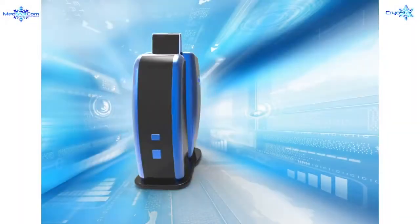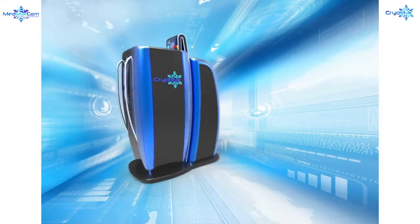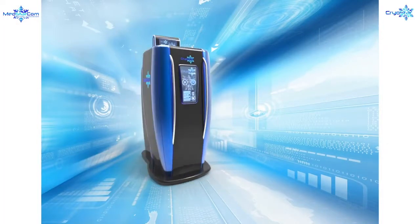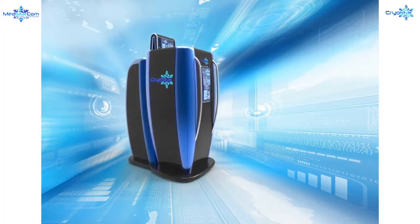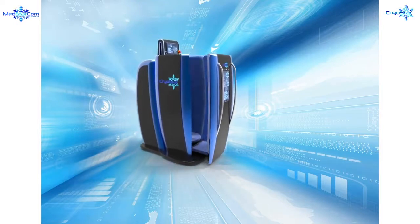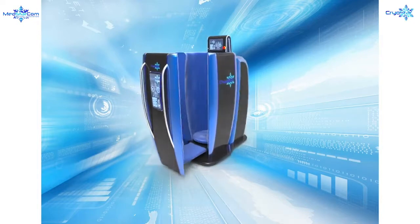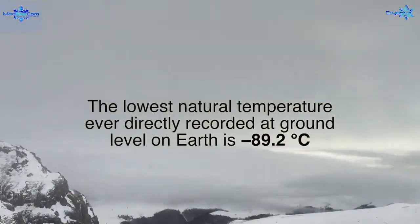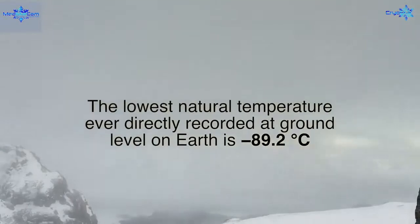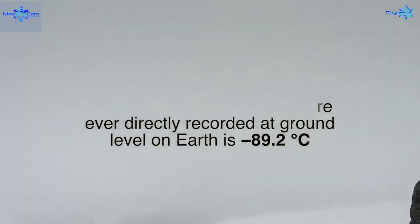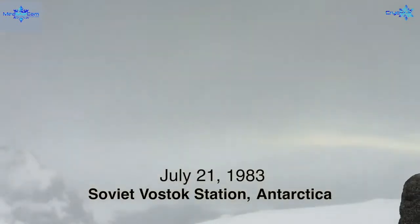Welcome to the world of cryotherapy. You are about to step into an arctic-like climate in a Cryo Innovations therapy chamber where the temperature will drop to minus 180 degrees Celsius. The lowest natural temperature ever directly recorded at ground level on Earth is minus 89.2 degrees Celsius, which was at the Soviet Vostok Station in Antarctica on July 21st, 1983.